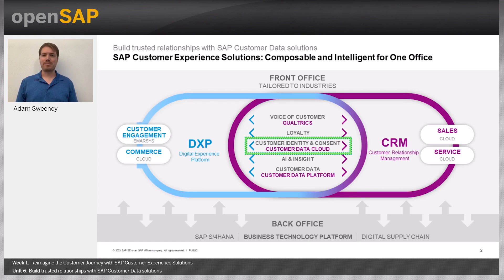Among its many capabilities, SAP Customer Data Cloud integrates seamlessly with social networks, has single sign-on, global access to observe local data privacy regulations for data residency, risk-based authentication, AI-powered account takeover protection, network-protected identity which takes action based on suspicious access behavior, and a progressive profile that aggregates customer data throughout the entire customer journey.